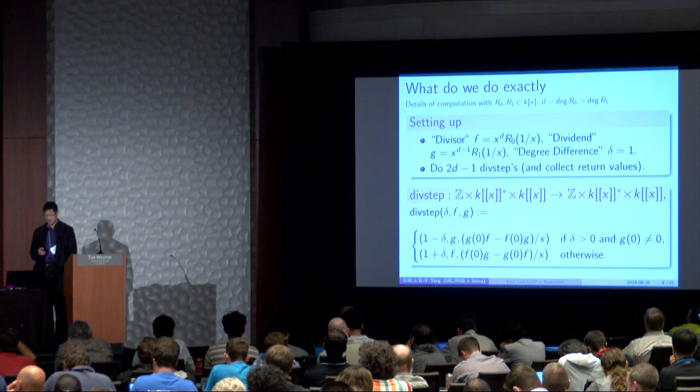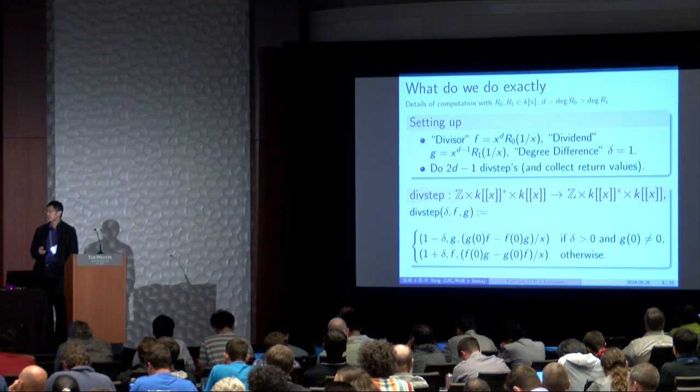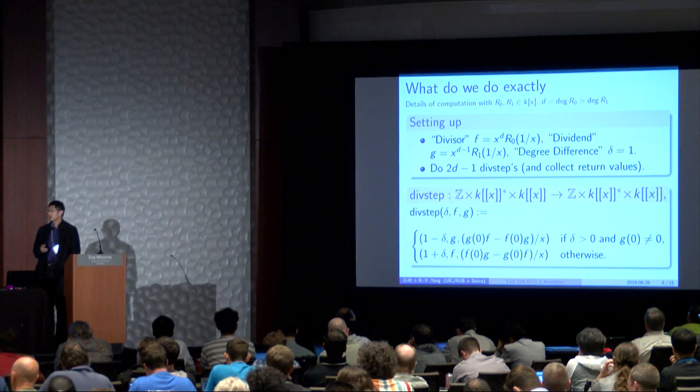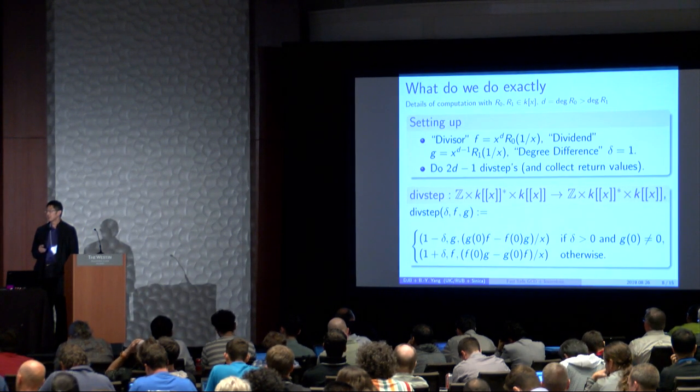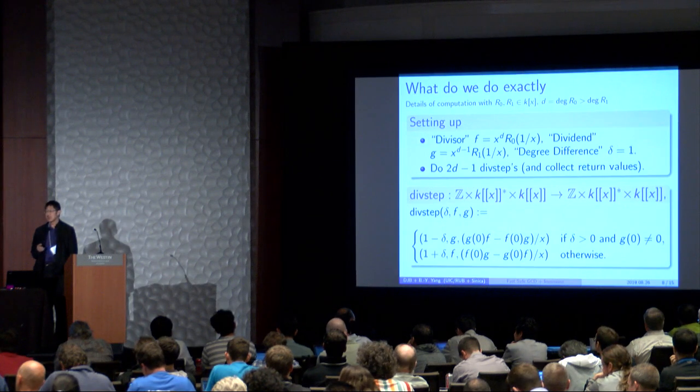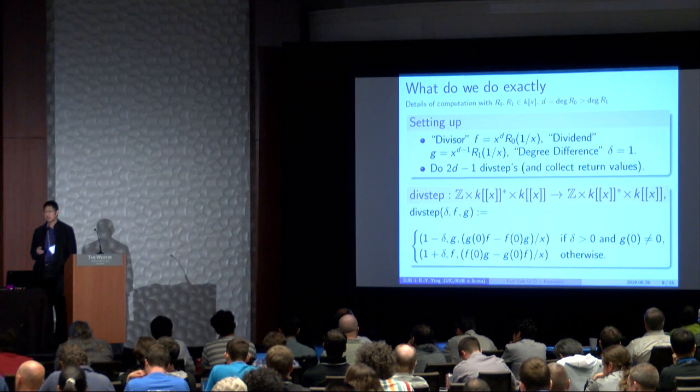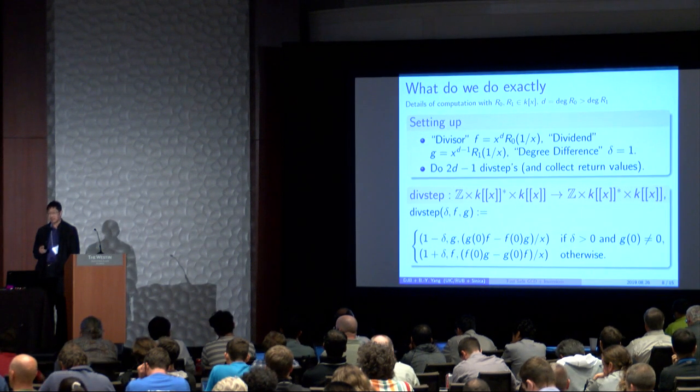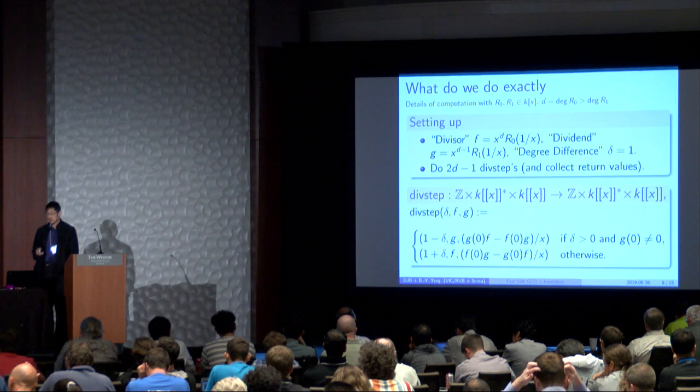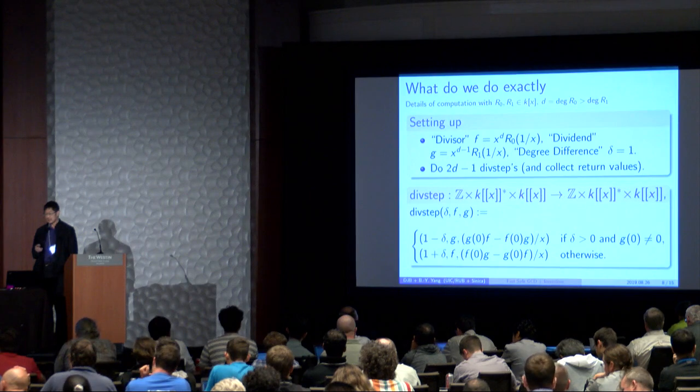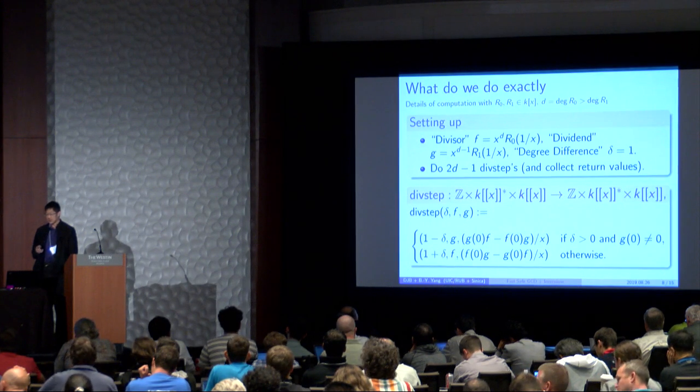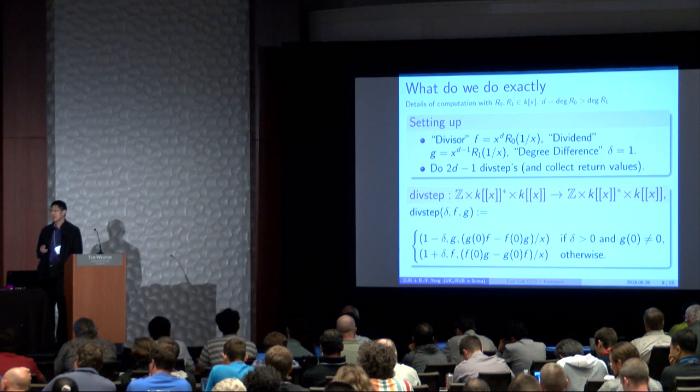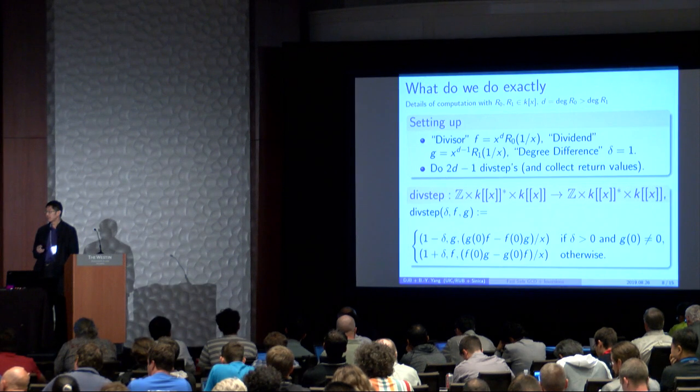That will give us the answer. So to make it more clear, the divstep is considered a map of the set, the integers times power series with non-zero constant terms times all power series to itself. And the divstep is given by the following formula. So there are two cases. One is, one happens if delta is greater than zero, and G has a non-zero constant term, and the other formula takes place otherwise.